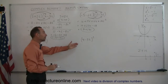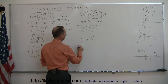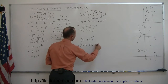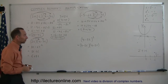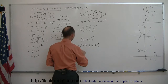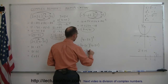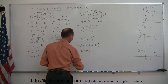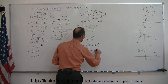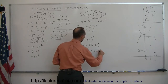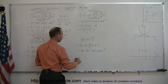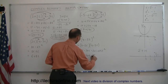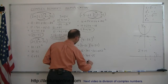Finally, we have 4 minus 5i multiplied by itself. You approach it the exact same way: 4 times 4 equals 16; 4 times negative 5i is negative 20i; minus 5i times 4 is minus 20i; and minus 5i times minus 5i is plus 25i squared. Adding the middle terms together: 16 minus 40i, and since i squared becomes negative 1, that's minus 25. So this is equal to minus 9 minus 40i.